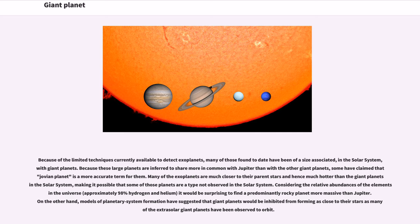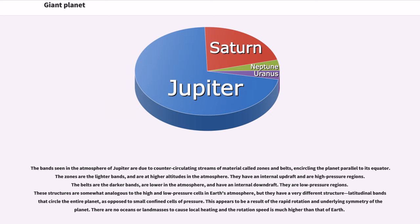Considering the relative abundances of the elements in the universe, approximately 98% hydrogen and helium, it would be surprising to find a predominantly rocky planet more massive than Jupiter. On the other hand, models of planetary system formation have suggested that giant planets would be inhibited from forming as close to their stars as many of the extrasolar giant planets have been observed to orbit.